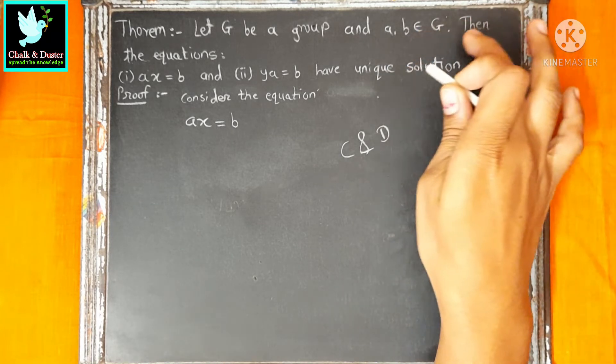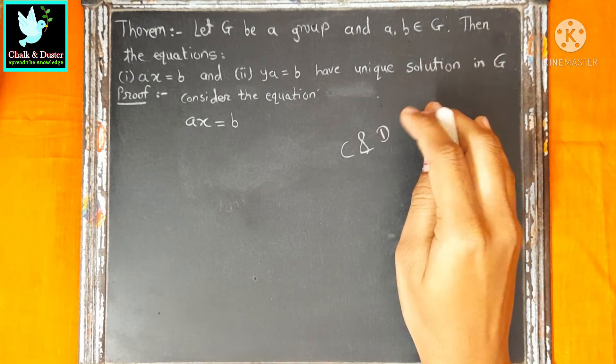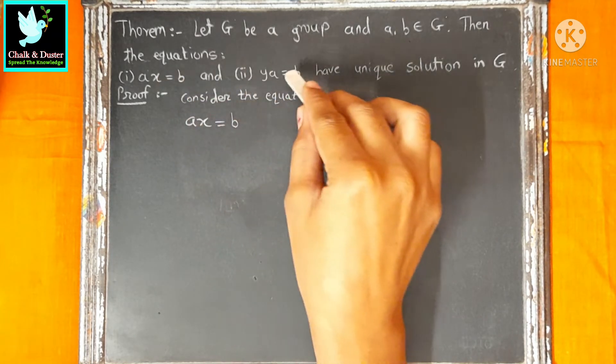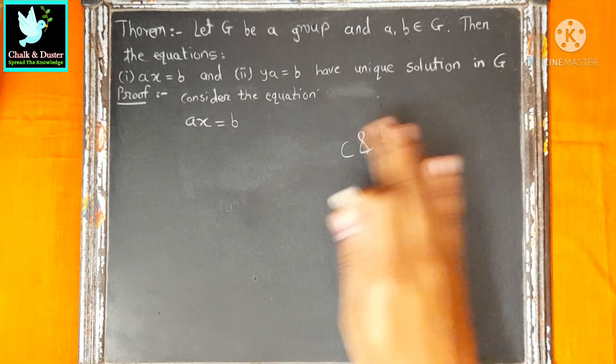Let G be a group and A, B belonging to G. Then the equations AX equal to B and YA equal to B have unique solution.